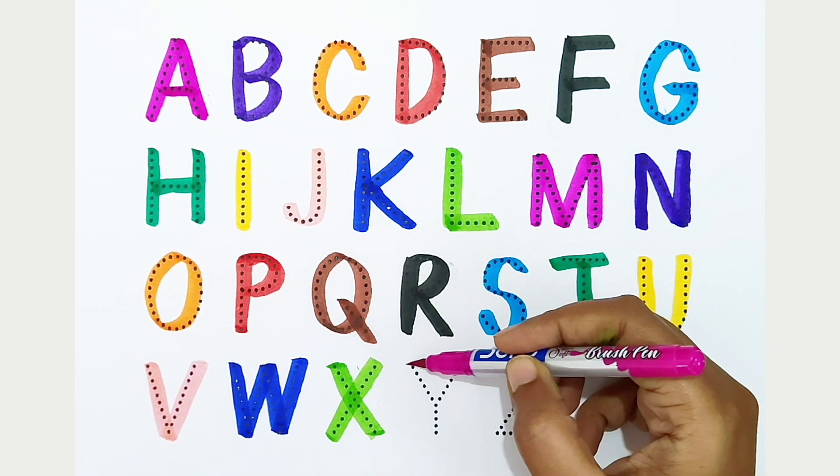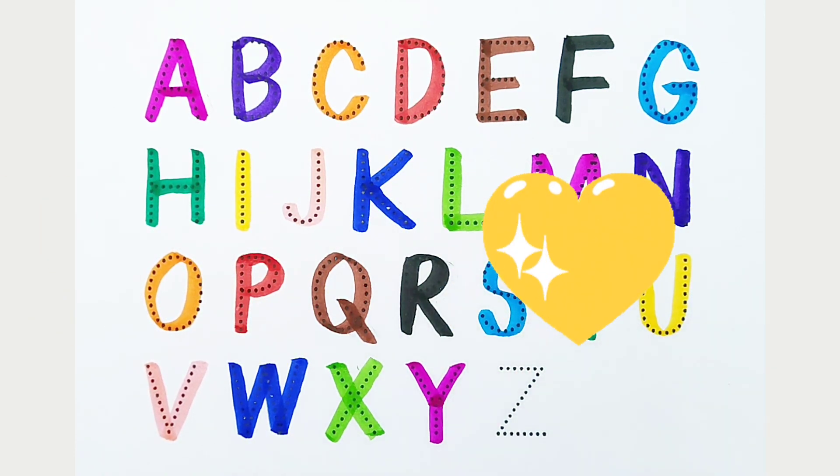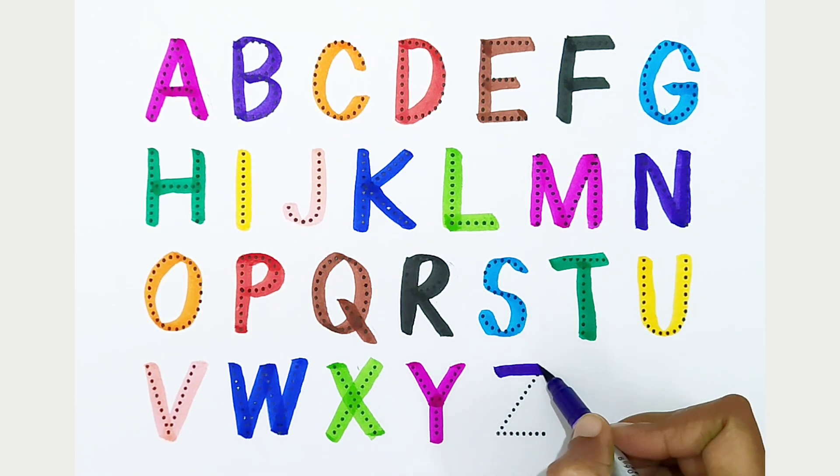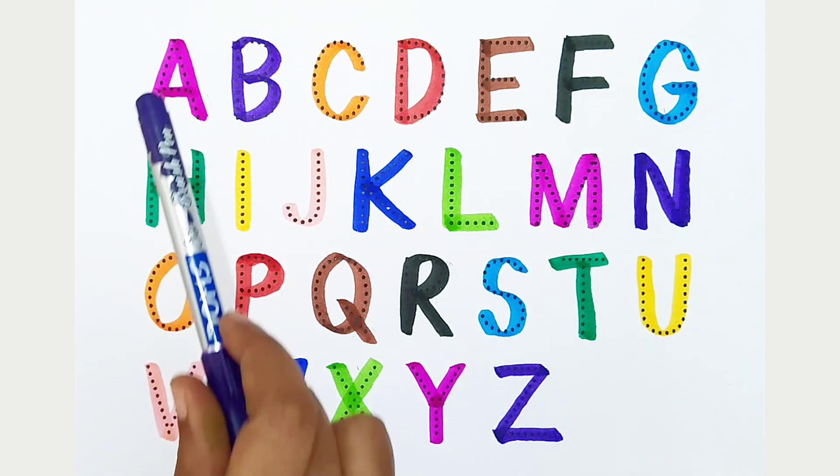Y: dark pink color. Y is for yellow. Z: violet color. Z is for zigzag. Once again: A, B,